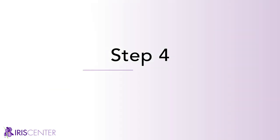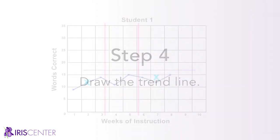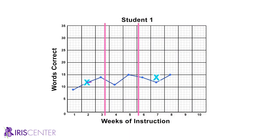Step 4: Draw the trend line. Draw a line beginning at the X in the first group and continuing through the X in the third group. In our example, we draw a line from the first point to the second point to create the trend line. We then label it with a capital T.